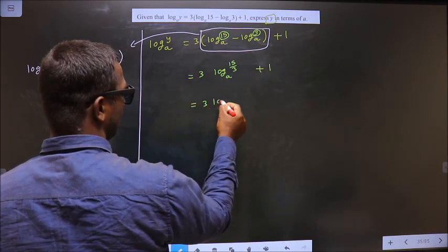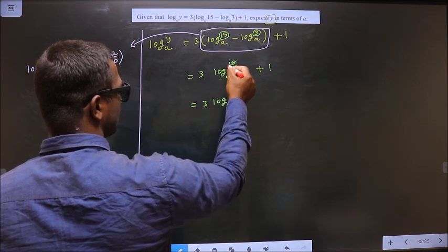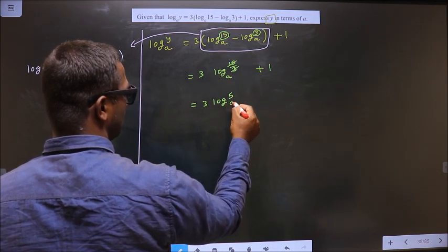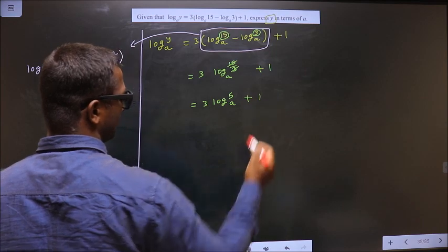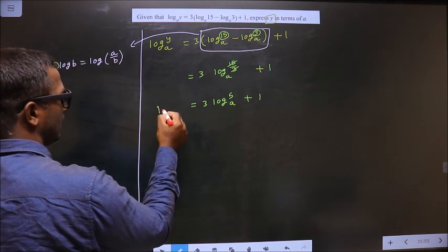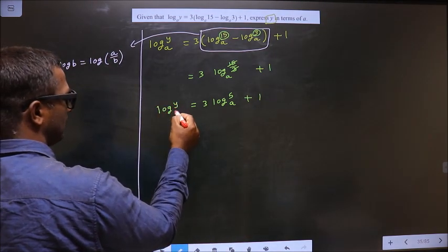So that is equal to 3 log 5 base a plus 1, since 15 divided by 3 is 5. On this side log y base a.